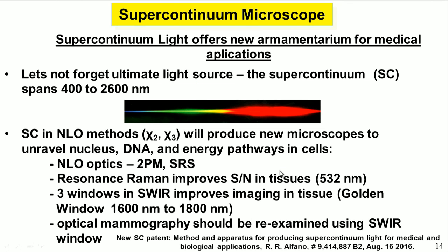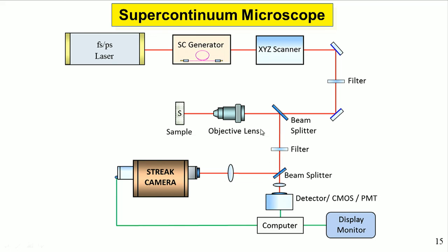Now we go to the supercontinuum. Everybody knows the supercontinuum — you send a femtosecond laser into a fiber and go from 400 to 2,600 nanometers, which can be used for a new type of microscope employing two-photon stimulated Raman resonances and so forth. Conceptually, a supercontinuum microscope is a femtosecond laser going into a fiber, liquid, or gas cell, with an X-Y scanner going into a microscope objective and tissue. You scan it, feeding either into a time-resolved streak camera for time-resolved imaging or into a spectrograph for spectral imaging.